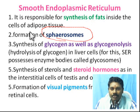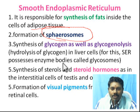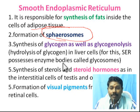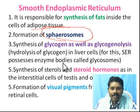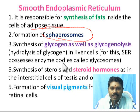Smooth ER is also present in the liver. In liver cells, smooth endoplasmic reticulum numbers are high because it is involved in glycogen formation and glycogenolysis. Glycogen is a polymer of carbohydrate, and glycogenolysis is the breakdown of glycogen into glucose.